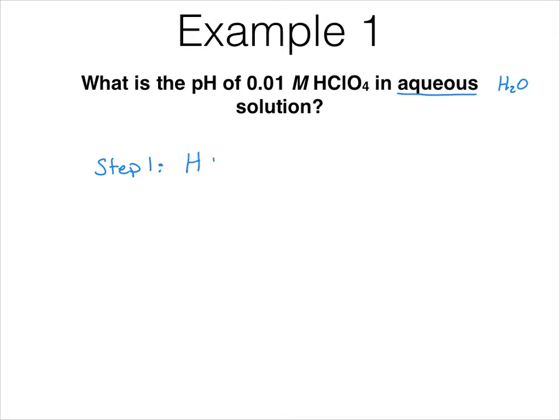So we want to know HClO4, is it an acid or is it a base? Well, this has a H out in front. And so based on our definitions, we know that this is an acid.